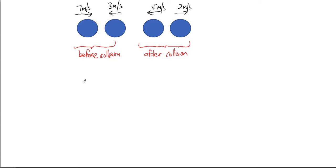Here, we imagine these two particles as two vehicles. One is moving towards the right at seven meters per second, and the other is moving towards the left.